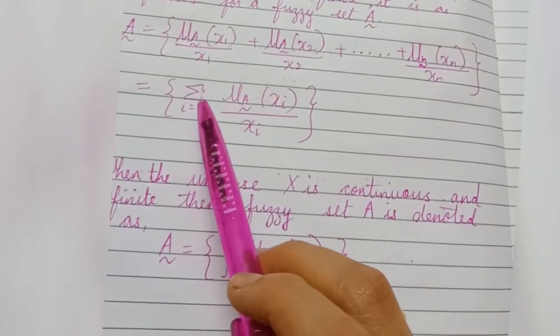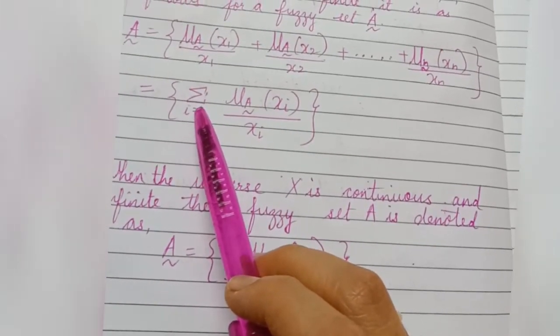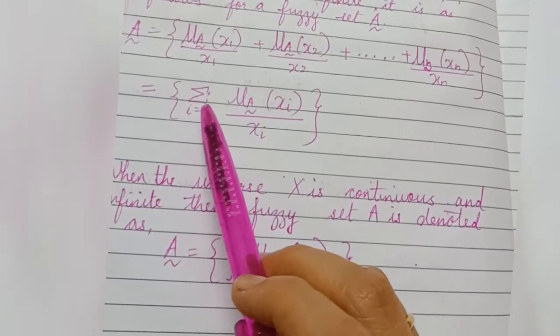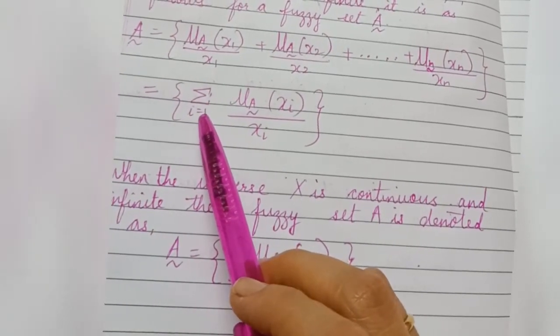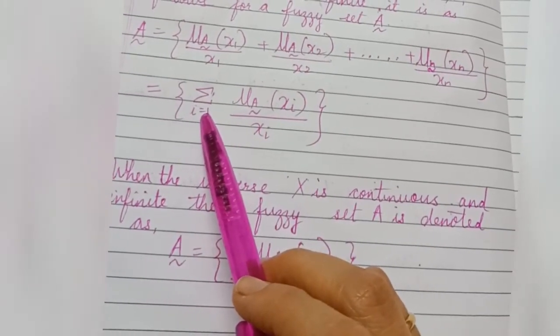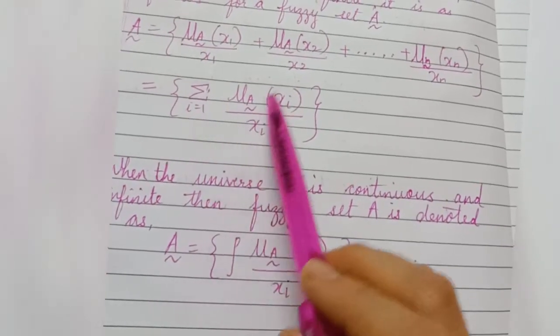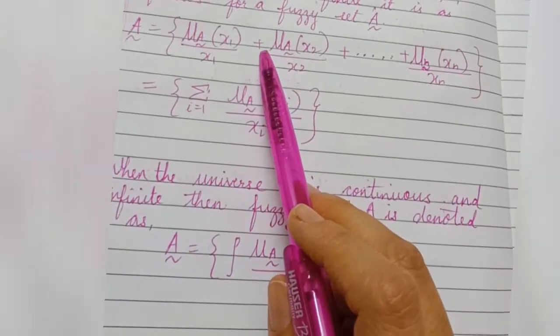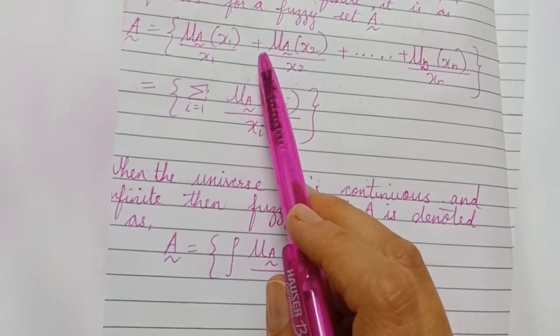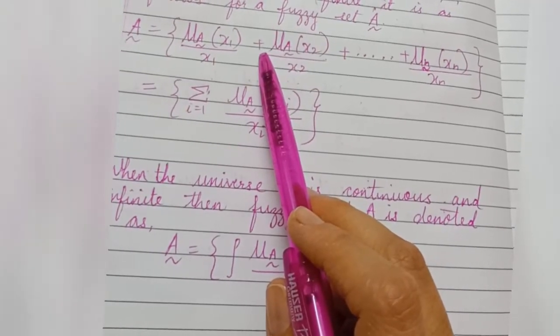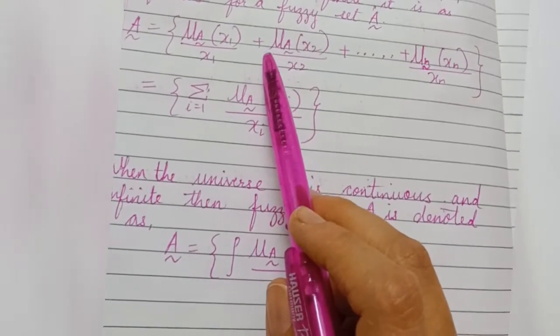Here the summation is not the algebraic summation, whereas it denotes collection or aggregation of the element. The plus sign is not algebraic addition but it denotes collection or aggregation of each element.